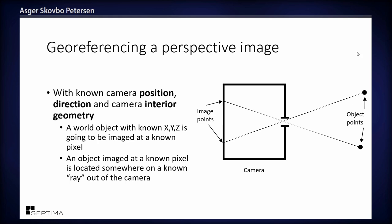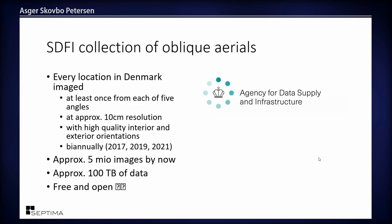A little more than a year ago, the Danish Agency for Data Supply and Infrastructure — called SDFI in Danish — approached us and asked us to build a new system for their data collection. In Denmark it's a relatively large collection, because every location in Denmark is imaged at least once from each of five angles: north, south, east, west, and top-down.